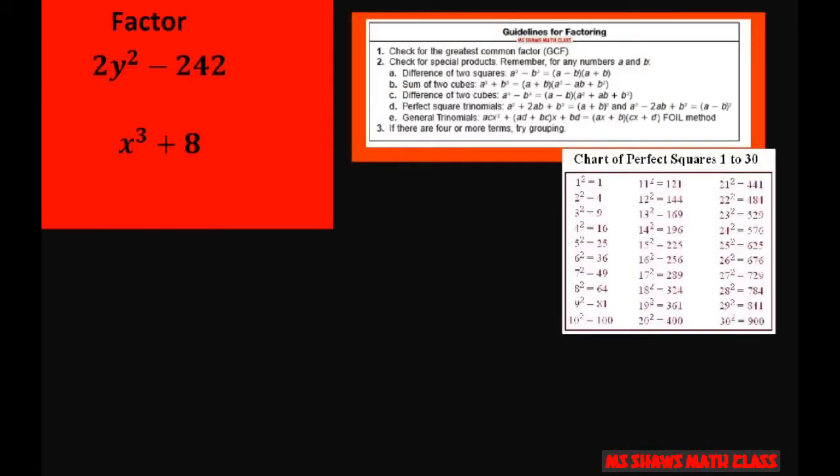The first thing we're going to do is notice these aren't really perfect squares. So for guidelines for factoring, I want to use step one and check for the greatest common factor or the highest common factor. I can divide both of these by two. Don't lose the divisor. Divide both terms by two and you get y squared minus 121.